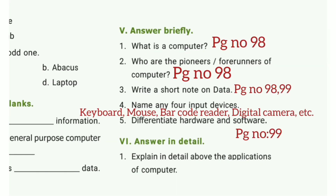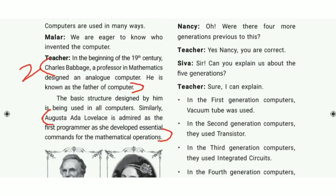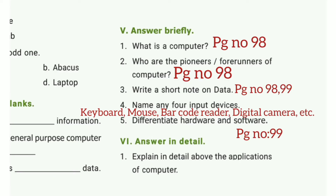Second question: Who are the pioneers and forerunners of computer? Page number 98. Charles Babbage, a professor in Mathematics, designed an analog computer. He is known as the Father of Computer. Augusta Ada Lovelace is named as the first programmer as she developed essential programs for mathematical operations.